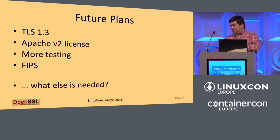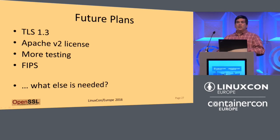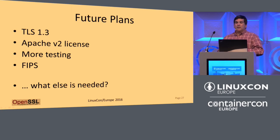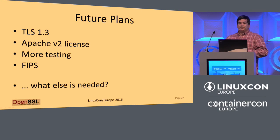Future plans: TLS 1.3. If you've been to the IETF, OpenSSL is notable by its absence — the timing just didn't work, we were busy with the 1.1.0 release. TLS 1.3 is certainly high on the list for the next release. We have stated publicly we want to move the licensing to Apache V2. People from the Software Freedom Law Center have been helping with us. More testing — we integrate fuzz testing and have received donations of system images from Amazon to do more continuous fuzz building. And FIPS is very important to a large section of our users.